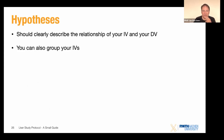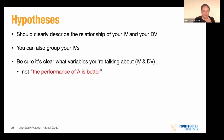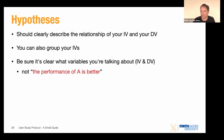Then you have hypotheses. Hypotheses should clearly describe the relationship between independent variables. Don't say 'the performance of A is just better' — clearly state what variables you expect to change in which direction, and explain what you expect to happen: not just 'there will be a difference' but that one thing will be faster or more accurate than the other.